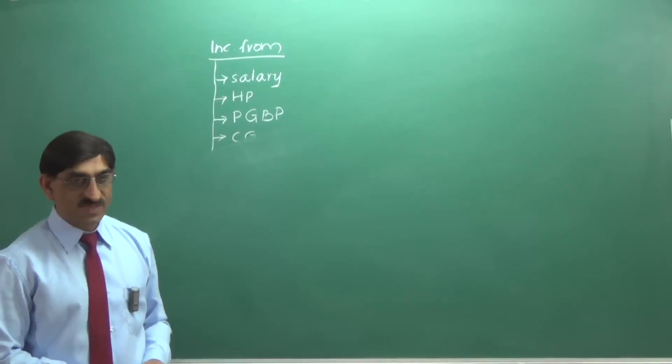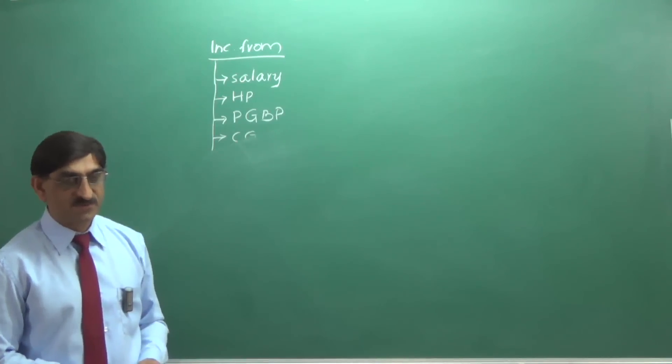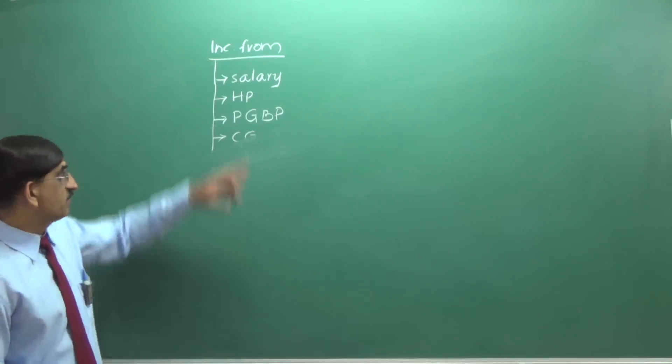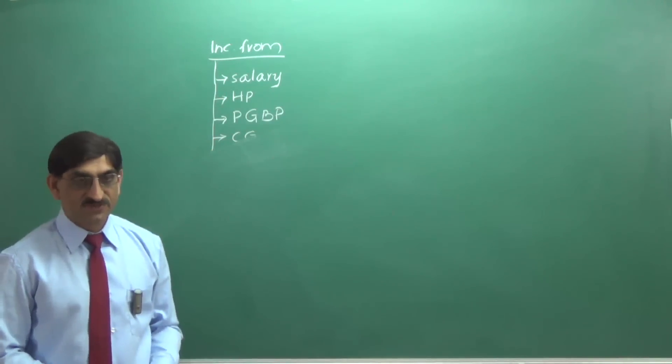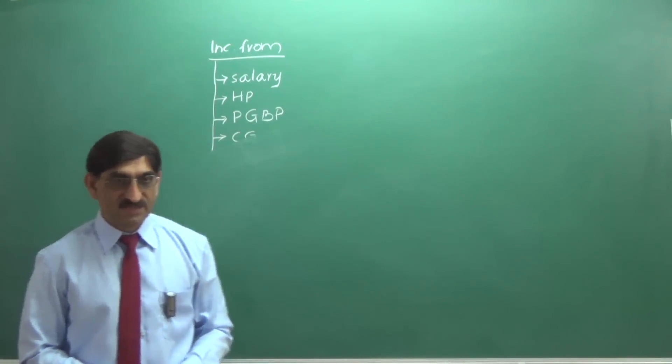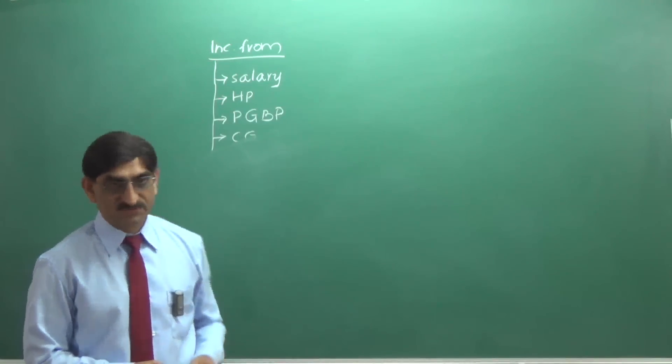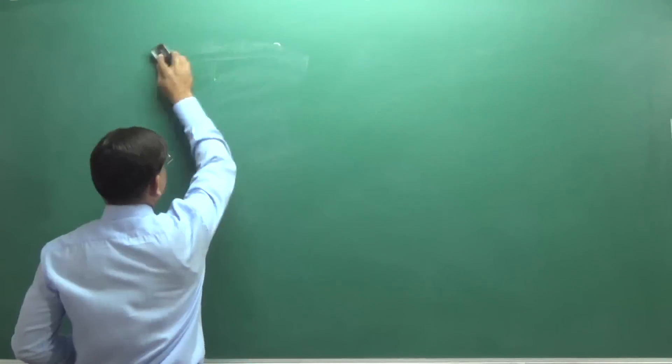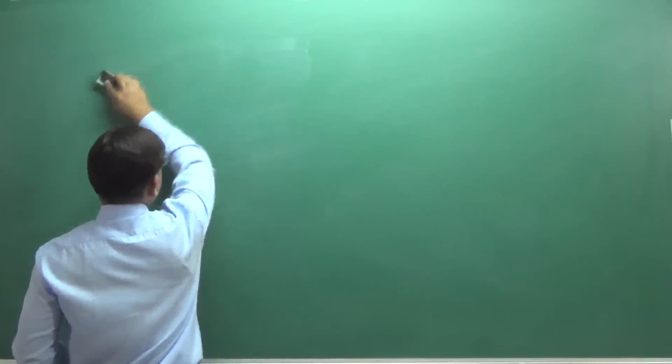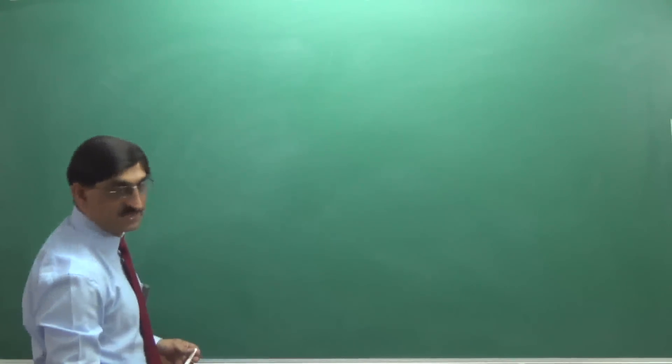Income from other sources could capture something like winning from horse races. This cannot be captured in any of the four heads above. So, an author who has written a book, he gets income. His income is recorded in income from other sources. Now, let's go to income from other sources in detail.